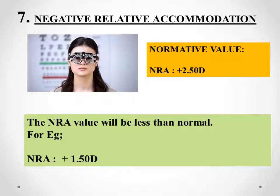The 7th test is the NRA test, or negative relative accommodation test. The tests mentioned so far — cover test, PBCT, vergence facility, NPC, and PFV — are all direct tests to assess convergence insufficiency. Now I will explain the indirect tests. The NRA test is an indirect test.